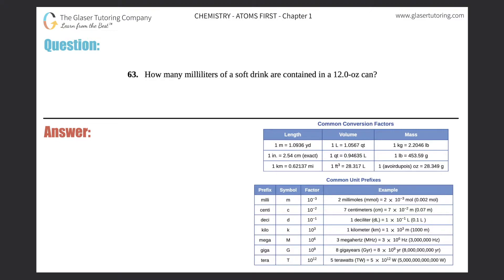Number 63: How many milliliters of a soft drink are contained in a 12 ounce can? This is a pure conversion problem. They give you a given which is 12 ounces and they want you to find how many milliliters there are, so this is mL.